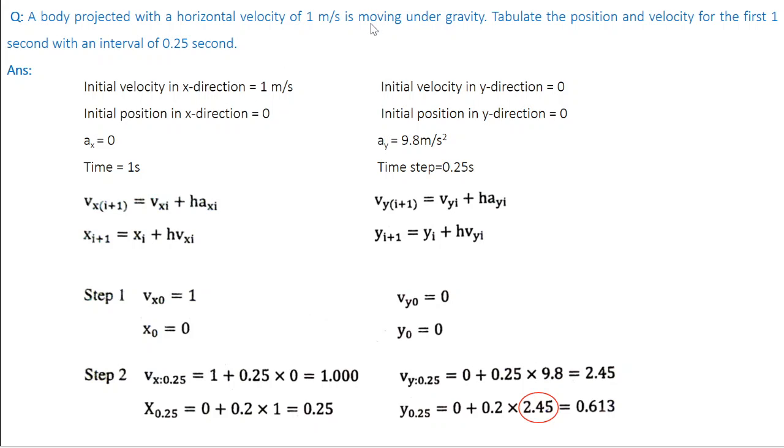In the y direction, nothing is mentioned. So, as always, we take the initial velocity in positions as 0. So, initial velocity in y direction is 0 and initial position in x and y directions are 0.